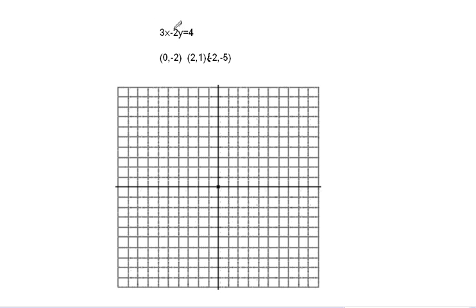And there's our function in its original form, our line in its original form. So 0 and negative 2 will be right here. 2 and 1, 2 and 1 will be right here.